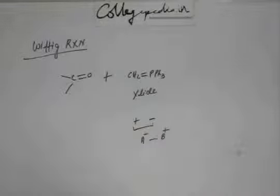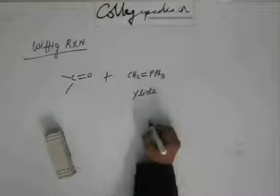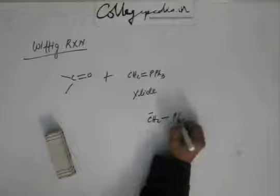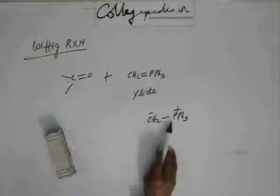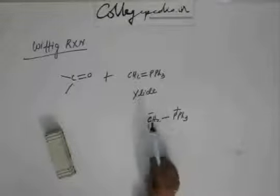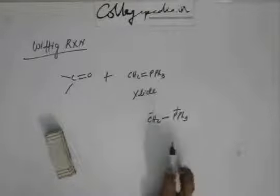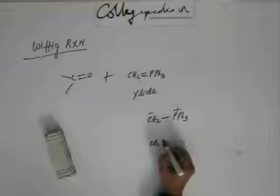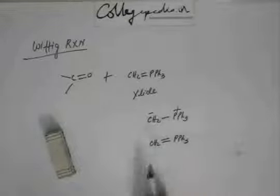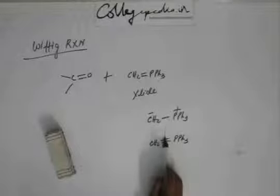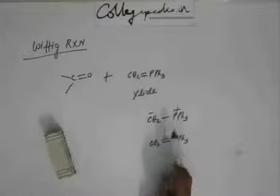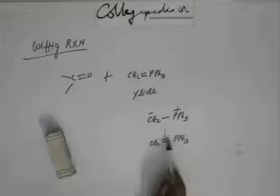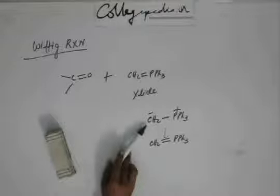So this is a ylide. The reason why this is a ylide is it actually exists like this: CH2 minus and PH3 plus. Phosphorus is making four bonds and there is an empty d orbital, so this electron can go into the d orbital and form a bond. It is equivalent to showing phosphorus making five bonds. This bond is weak because the negative charge of carbon is on a p orbital and the empty orbital on phosphorus is a d orbital — it's a weak bond, so the charge is mostly on the carbon.